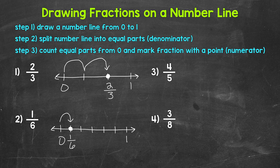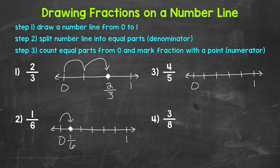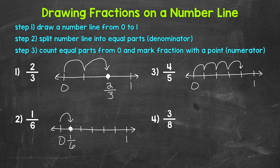Let's move on to number three where we have four-fifths. First, we need our number line from zero to one. Next, we need to split the number line into equal parts. Our denominator is five, so we need five in total: one, two, three, four, and five equal parts — so fifths. The distance between zero and one is now divided into five equal parts. Our numerator is four, so we go over four out of the five equal parts: one, two, three, four. Thinking about fifths as we count — that was one-fifth, two-fifths, three-fifths, and four-fifths. Now we can mark our fraction here and label it four-fifths.